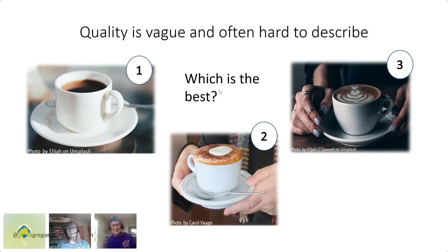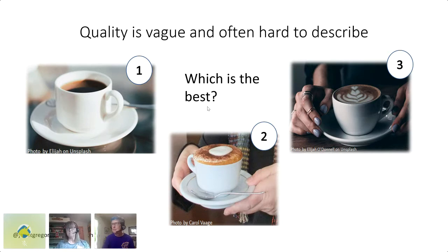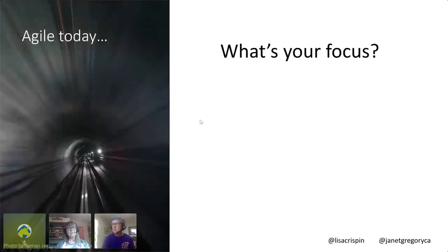Think about how you made that choice. Did you think about the quality of the coffee at all — the beans, where they came from, how they were roasted, whether it came from a drip coffee maker or a cappuccino maker? What was the perspective behind your choice? In agile today we have different focuses — think about what your focus is when we build our product.